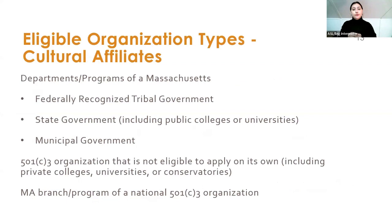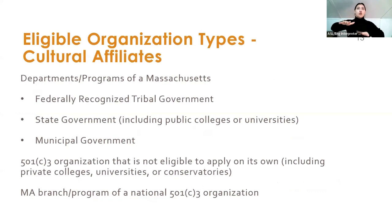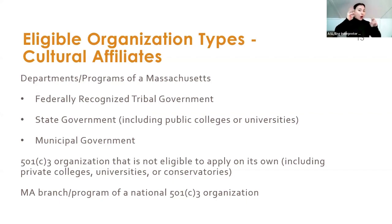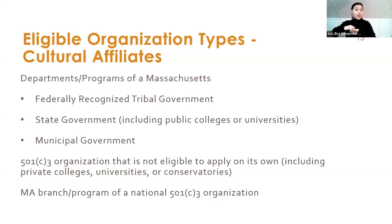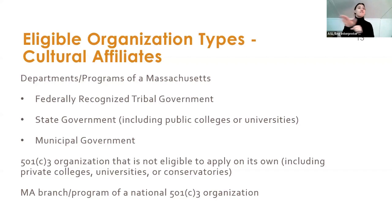The other type of eligible organizations are what we call cultural affiliates — semi-independent programs or departments that operate under a non-cultural parent organization. That encompasses a diverse range of entities. A cultural affiliate might operate under a governmental parent organization or under another independent nonprofit that is not fully cultural and would therefore not be eligible to apply on its own.